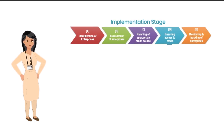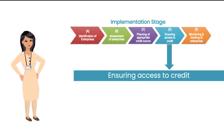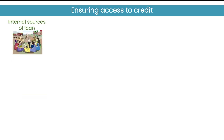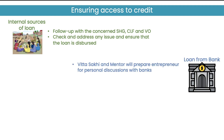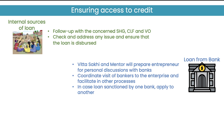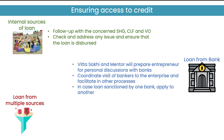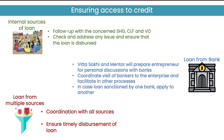The fourth step in the implementation stage is ensuring access to credit to the entrepreneur in a timely manner. If the loan is to be disbursed from internal sources, Vittisakhis and Mentors will follow up with the concerned SSG, CLF and VO, check and address any issues, and ensure that the loan is disbursed. In case of a bank loan, Vittisakhis and Mentor will prepare the entrepreneur for personal discussions with banks, coordinate visits of bankers to the enterprise, and facilitate any other process of the bank. If a loan is not sanctioned from one bank, Mentors can apply to another bank. If the loan is being disbursed from multiple sources, Vittisakhis and Mentor should coordinate so that amounts from all sources — SSG, CLF, program fund and bank — are received in a timely manner.